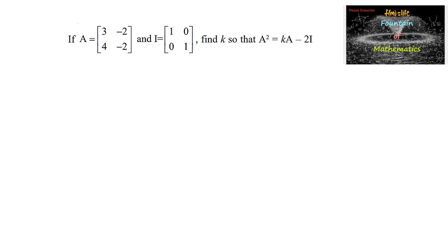If A is equal to the matrix 3, minus 2, 4, minus 2, a 2 by 2 matrix, and I is equal to 1, 0, 0, 1, an identity matrix of order 2 by 2.